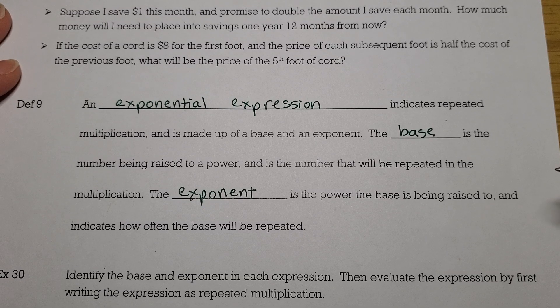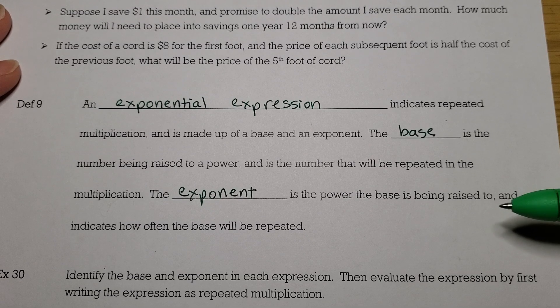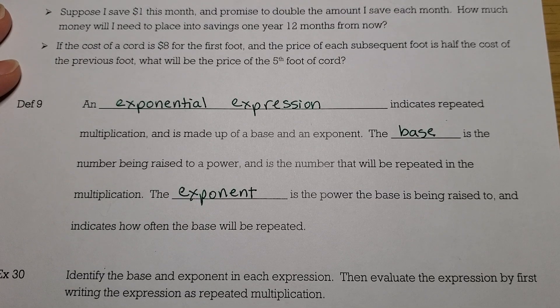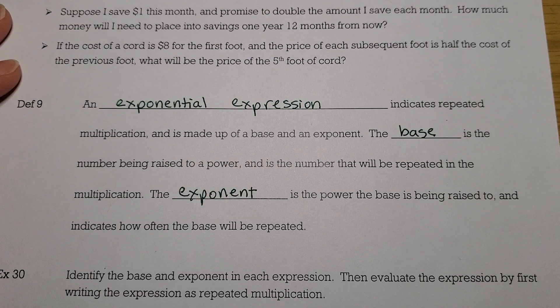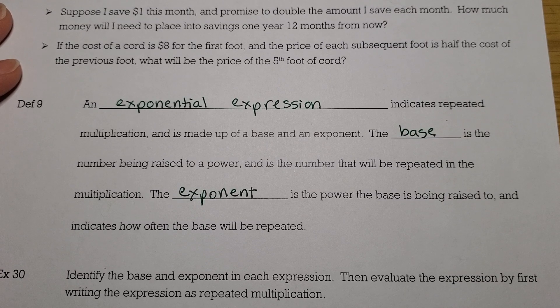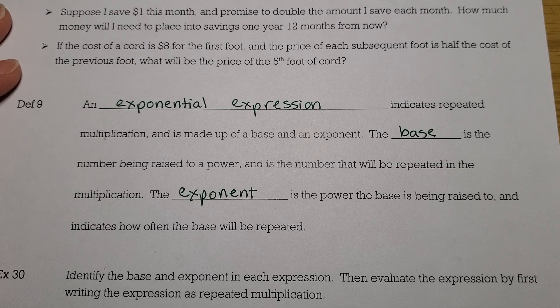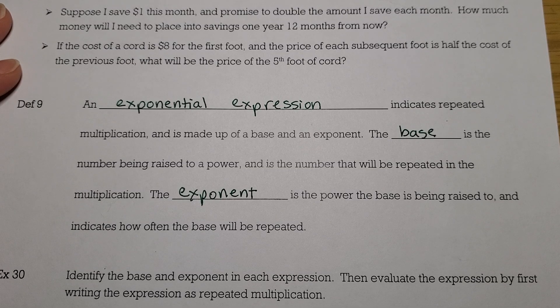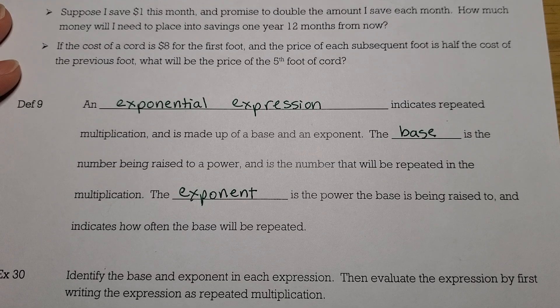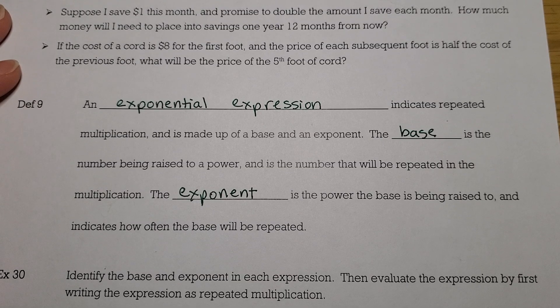So for example, if I'm doing something where I'm halving, like cutting in half the cost of something each time, then the base would be a half. And if I wanted 5 feet of cord, then I would do 1 half to the fifth power, or use an exponent of 5 to show that we would be multiplying that one-half five times.